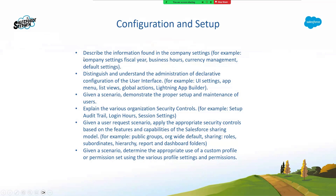Configuration and setup. Let's get the boring stuff out of the way: 'Describe the information found in company settings.' When I say we always skip reading through this stuff, I'm referring to myself from my own experience. Company settings, fiscal year, business hours, currency management, default settings. When we see company settings, what do we get that confused with? Company settings, company information, and default locale — I got these three confused and it cost me many questions.